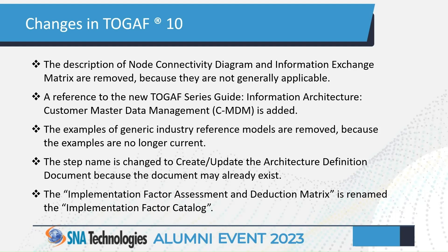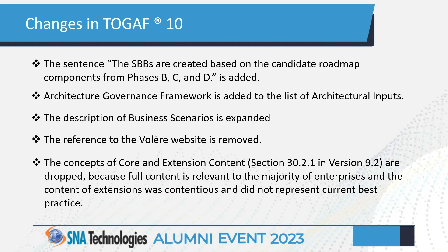The implementation factor assessment and deduction matrix has been renamed to the implementation factor catalog. A sentence has been added in opportunities and solutions stating that solution building blocks are created based on candidate roadmap components from phases B, C, and D. The governance framework has also been added to the list of architecture inputs.